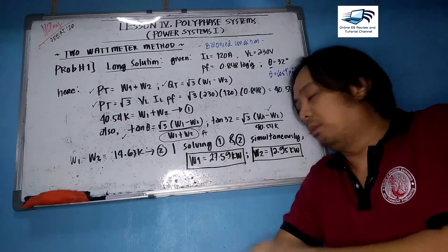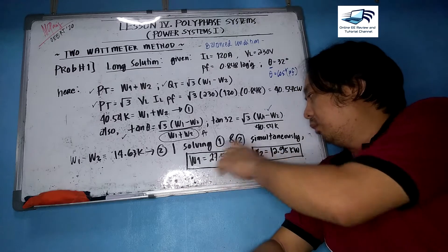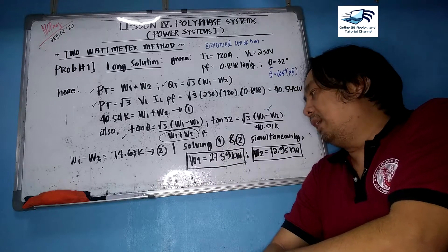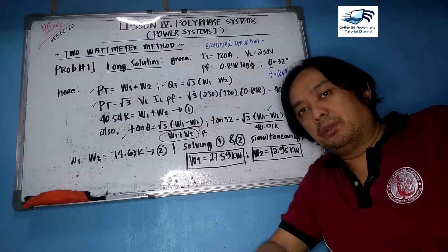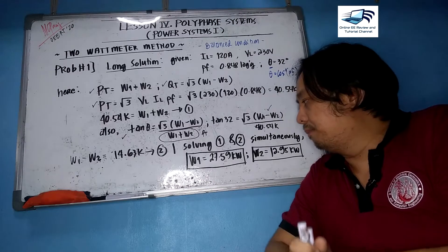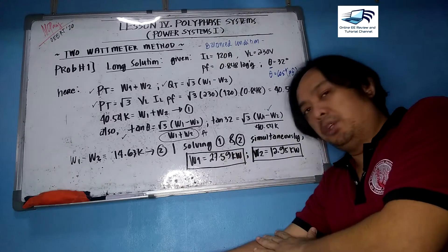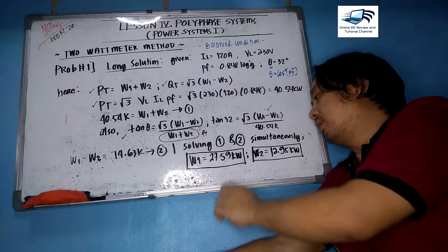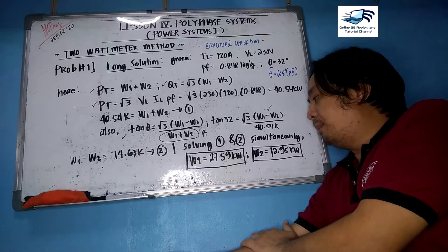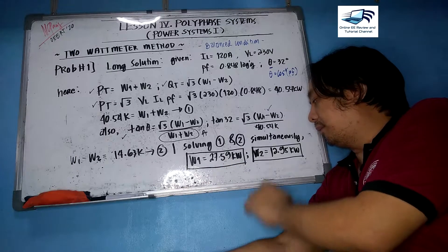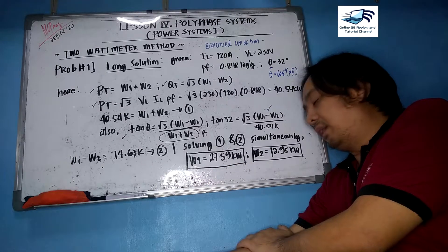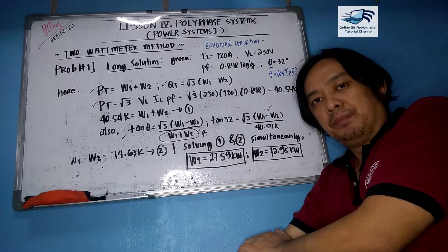Solving equations one and two simultaneously using a calculator's SHIFT-SOLVE function or algebra, we get W1 = 27.59 kilowatts and W2 = 12.95 kilowatts.